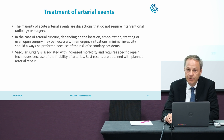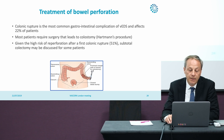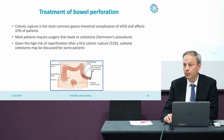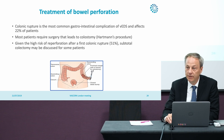Vascular surgery itself is possible but is associated with increased morbidity, and the best situations would be arterial repair in programmed rather than emergency settings. The treatment of bowel perforation is surgical — most patients would require a Hartmann's procedure, a hemicolectomy with colostomy. Given the high risk of re-perforation after the first colonic rupture, subtotal colectomy may be discussed for some patients.